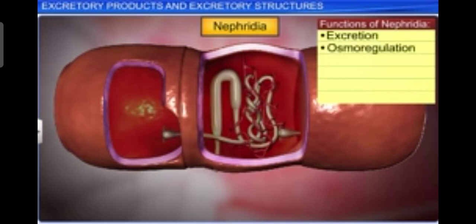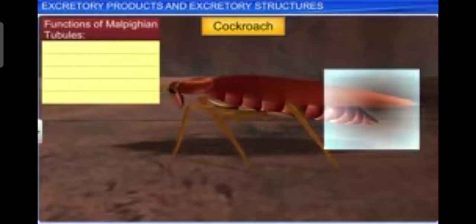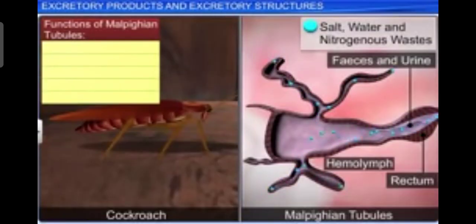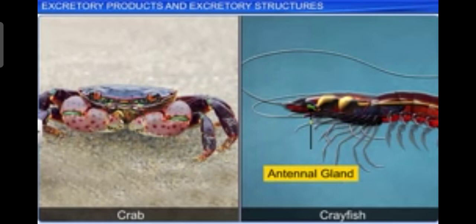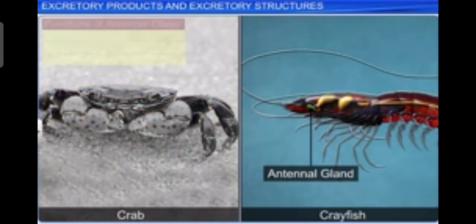Antennal glands or green glands perform the excretory function in crustaceans like prawns. These antennal glands or green glands are also present in crustaceans like crayfish or crabs.